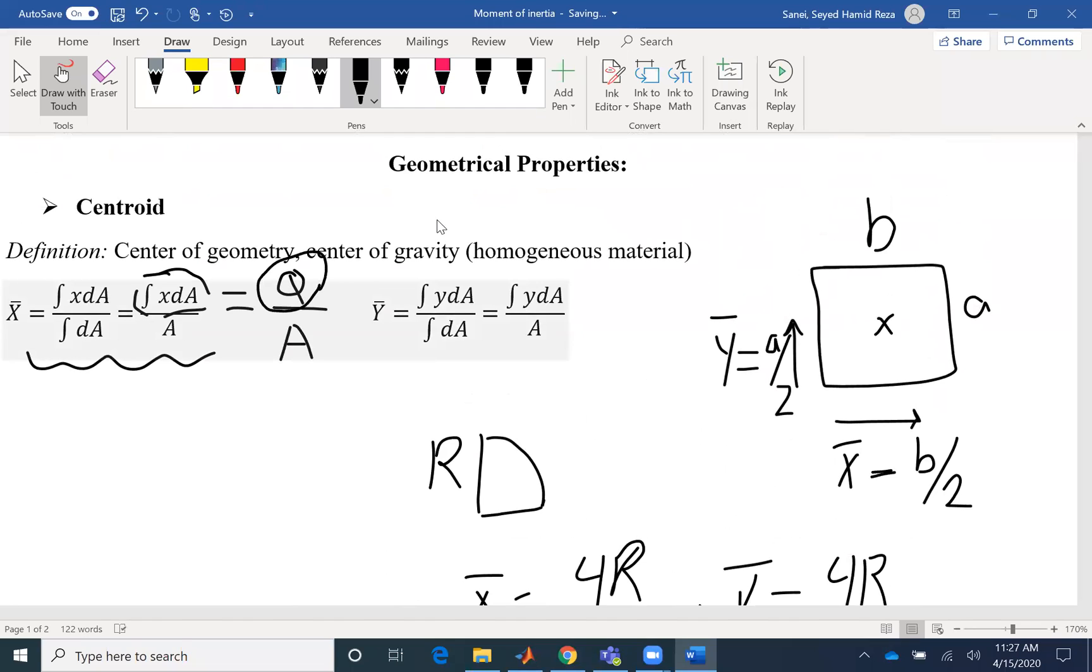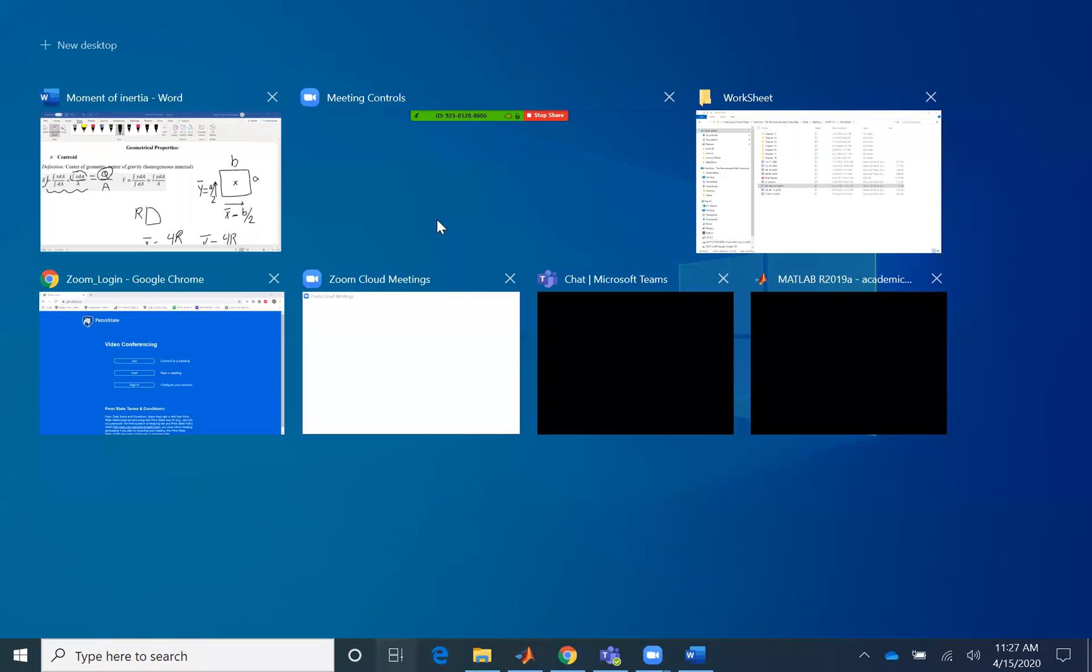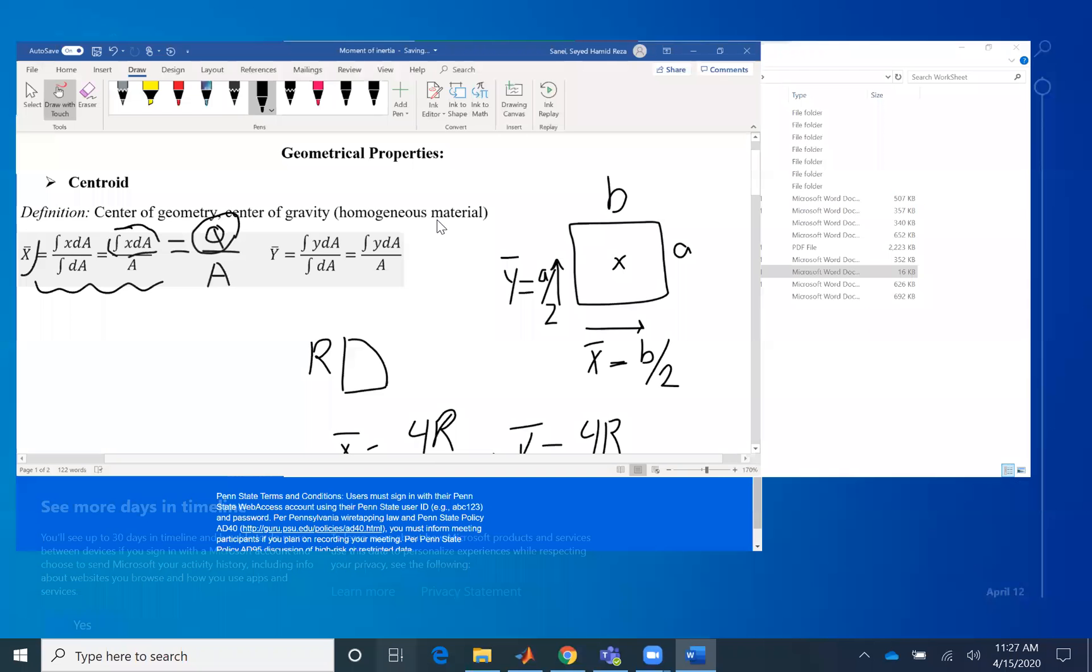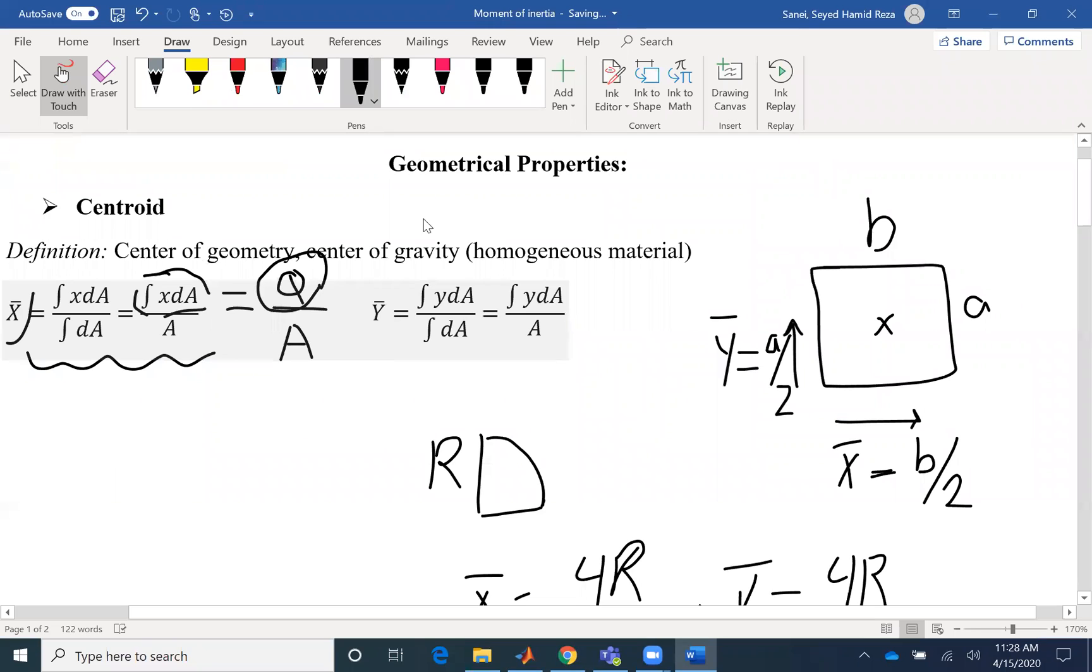If you want to find the first moment of area, if you already have your X bar, X bar is just X bar times A.